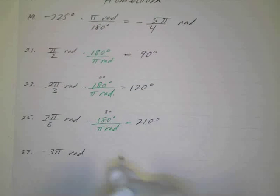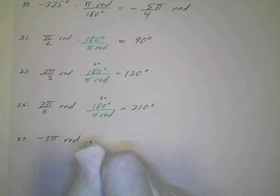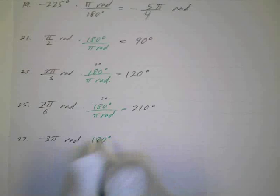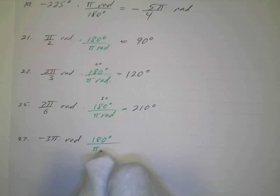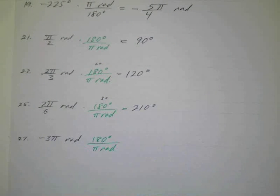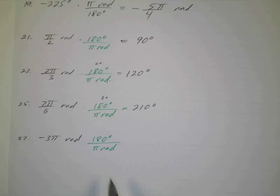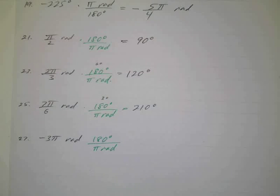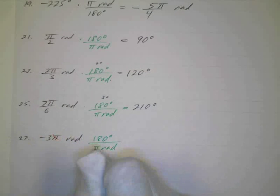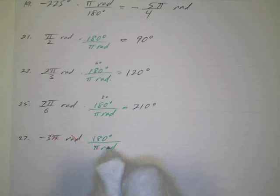And the last one. Again, there's 180 degrees per π radians. So that's important that you understand those basic concepts. And then the pi's cancel. I'll show you this in this one. Here the pi's cancel and here the radians cancel.